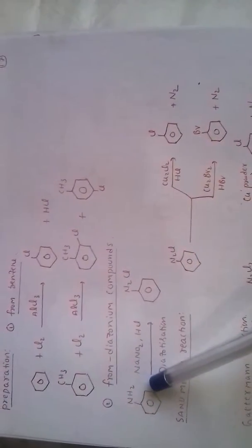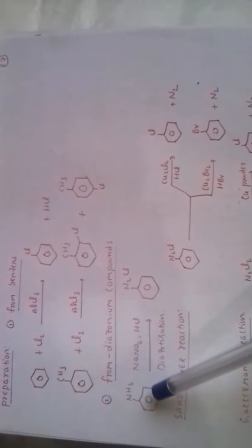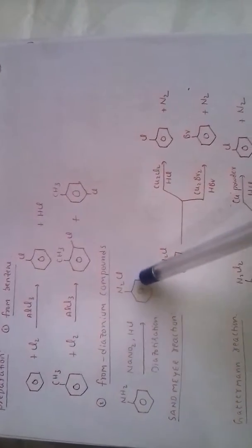Chlorobenzene preparation from diazonium compounds. Aniline when reacted with sodium nitrite and HCl, diazotization reaction takes place. Here azo linkage is formed, so it is known as benzene diazonium chloride.